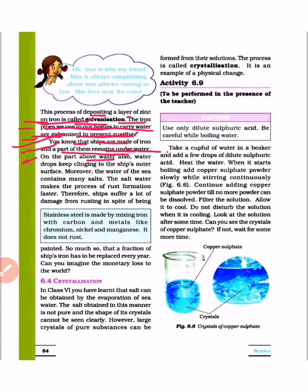On the part above water, which is above the part of the ship, water drops keep clinging to the ship's outer surface. Moreover, the water of the sea contains many salts. The salt water makes the process of rust formation faster. Therefore, the ships suffer a lot of damage from rusting in spite of being painted.